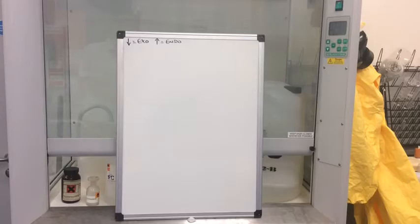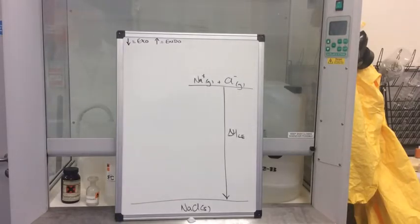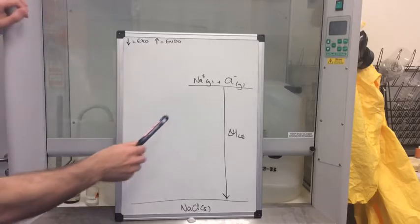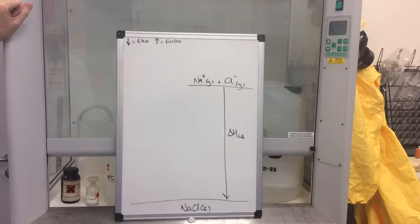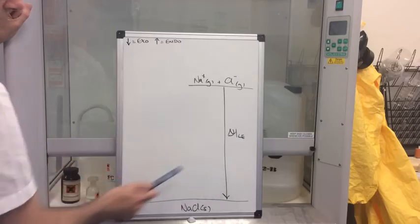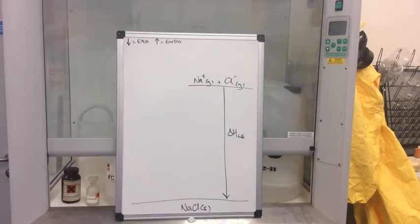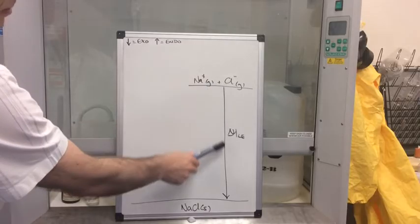There's a rule I need to let you know about: the arrows we use indicate whether a reaction or process is exothermic or endothermic. A down arrow signifies an exothermic process, and an up arrow indicates an endothermic process. So we're going to start off the Born-Haber cycle like this. You can see the lattice enthalpy for sodium chloride on the board — ΔH_LE is the enthalpy change for the formation of one mole of a solid ionic lattice from its gaseous ions, and of course it's exothermic, so this arrow must point down.